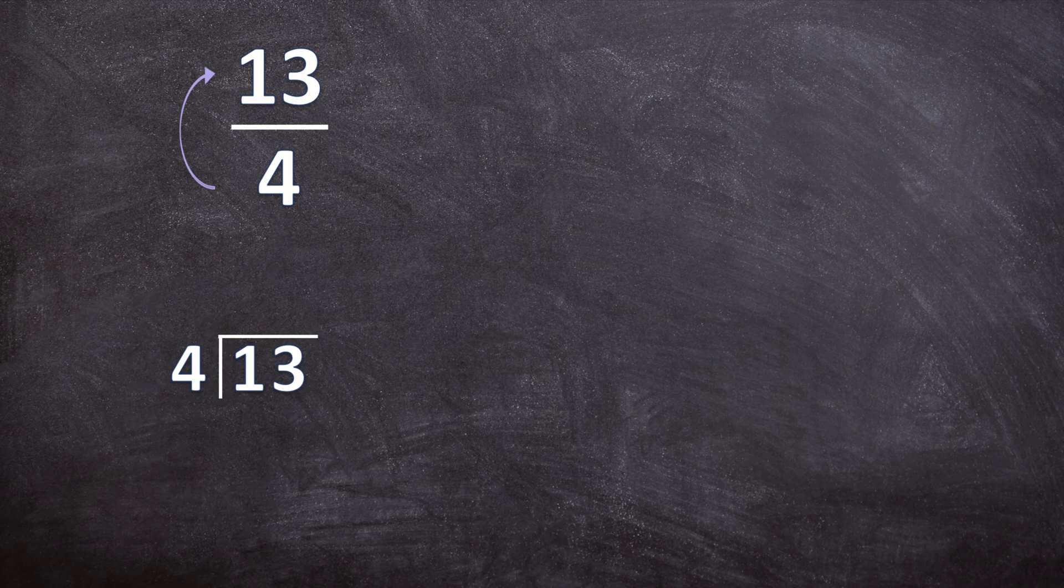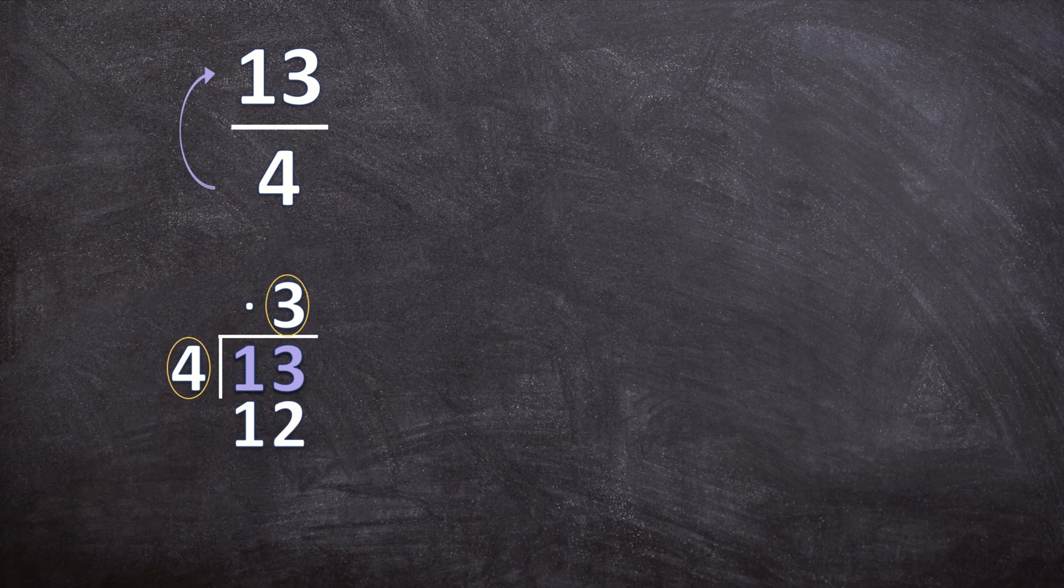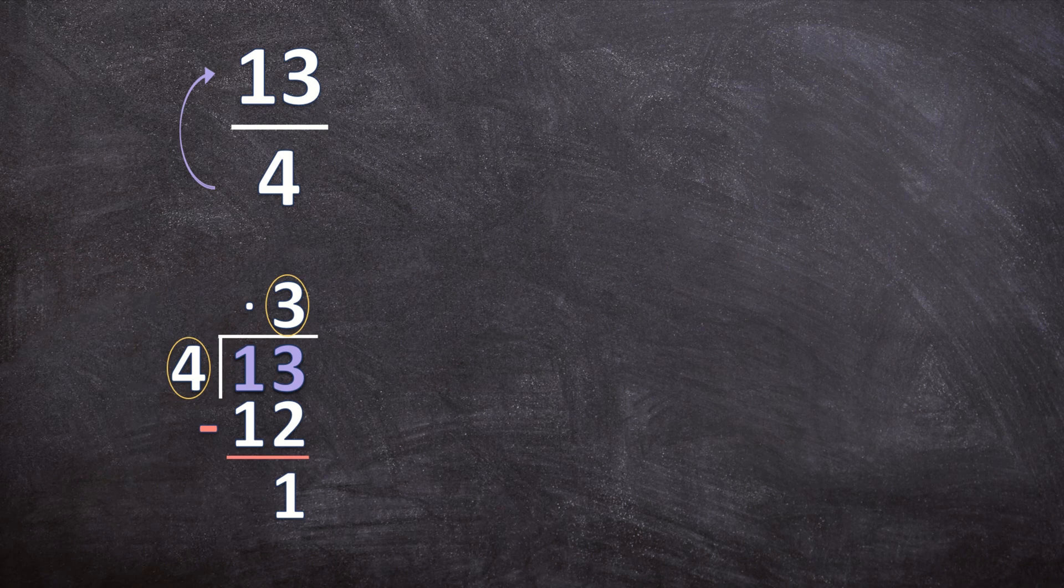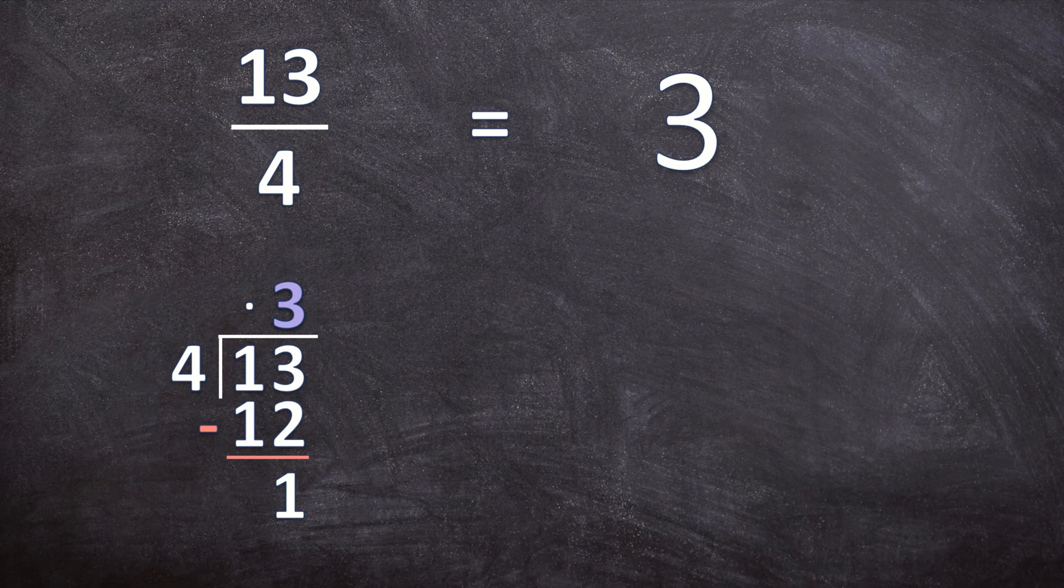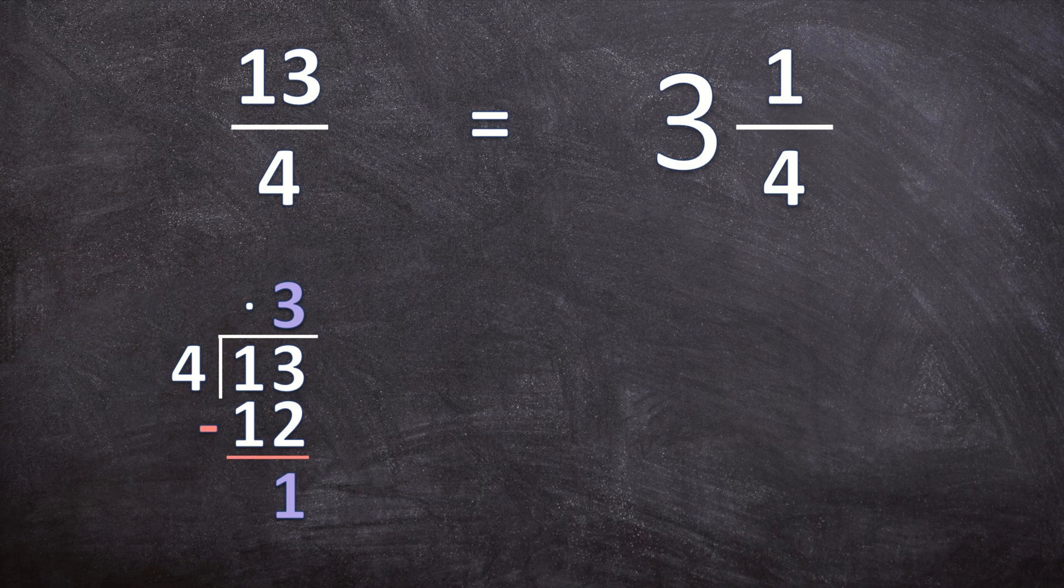Now let's see how many times we can take 4 out of 13. First, how many times can 4 go into 1? 4 cannot go into 1. So how many times can 4 go into 13? 4 can go 3 times into 13. Now we multiply: 3 times 4 is 12. Remember, our next step is subtract: 13 minus 12 is 1. So what is our answer? We can take 4 out of 13 three whole times. So our whole number is going to be 3, and what's left over? What is our remainder? 1 out of 4 will be left over. So 13 over 4 converted to a mixed number is 3 and 1 over 4.